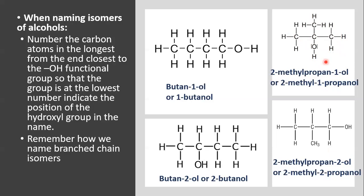Let's go over this one more time. The first step in drawing isomers is by moving the functional group. When we move it, we place it on the adjacent carbon to make it different — connecting it to the same carbon produces the same compound. Then we move on to forming branched isomers.